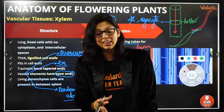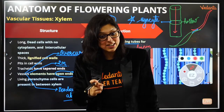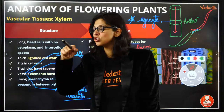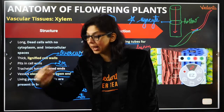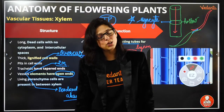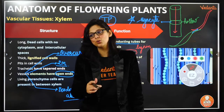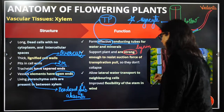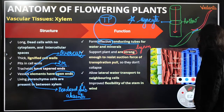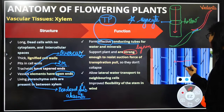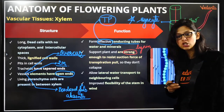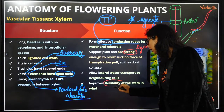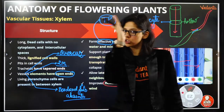Xylem has sufficient strength to resist the suction force of transpiration pull so that they don't collapse. They also allow lateral transport — water can move sideways through the parenchyma. There is flexibility of stem in the wind without breaking, which comes from the xylem. I will talk about proto-xylem, meta-xylem, exarch, and endarch in the next few minutes.